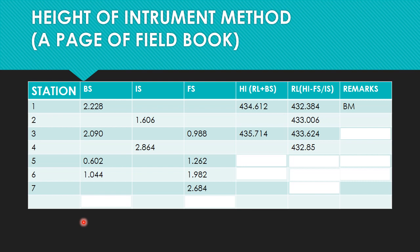Moving on to the next station, we subtract the foresight from the height of the instrument to find the reduced level. That is 435.714 minus 1.262, which gives us 434.452. The new height of the instrument is 434.452 plus the back sight 0.602, giving us a new height of instrument of 435.054.